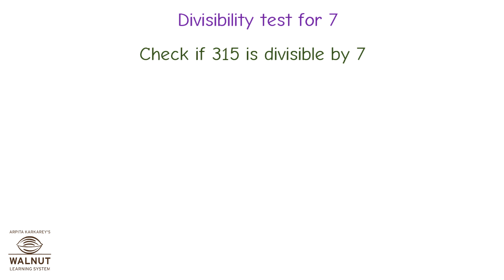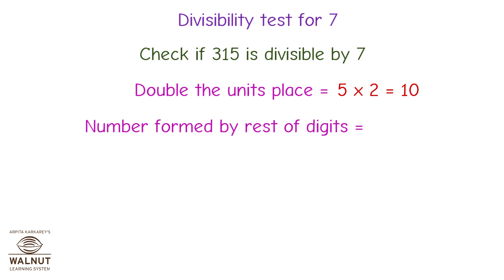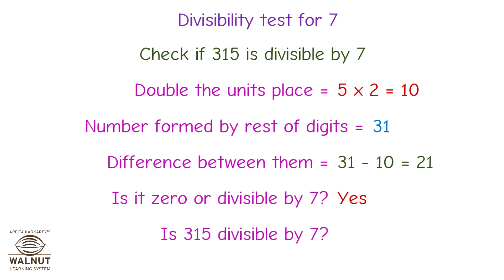Check if 315 is divisible by 7. Double the units place: 5 multiplied by 2 is equal to 10. Number formed by the rest of the digits is 31. Difference between them is equal to 31 minus 10, which is equal to 21. Is it 0 or divisible by 7? Yes! Therefore, is 315 divisible by 7? Yes!